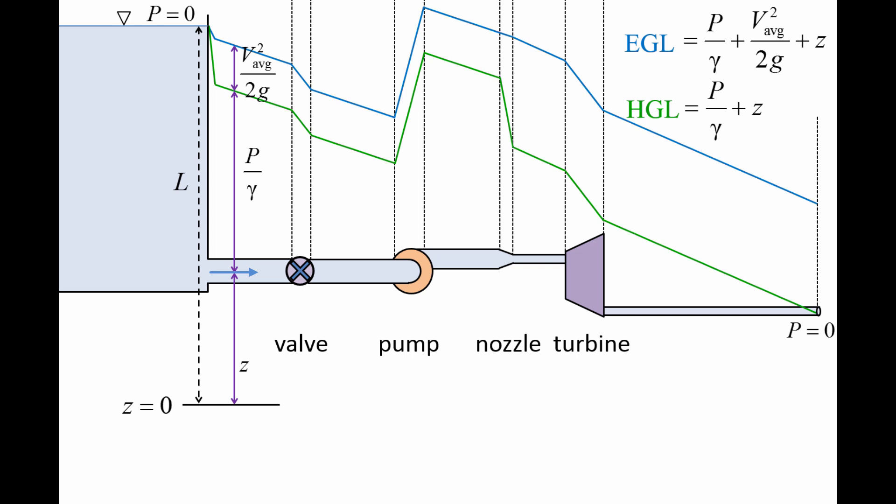Since the pressure at the exit of the pipe system is atmospheric, which is zero gauge, the HGL curve is just the elevation at the exit.